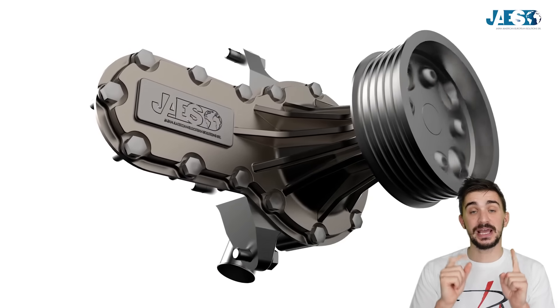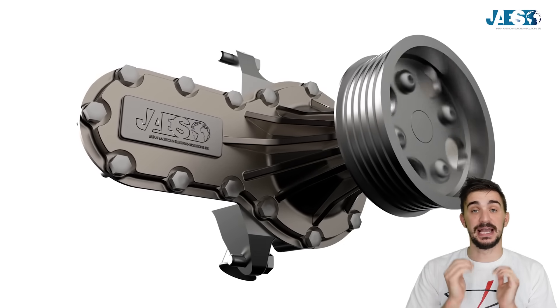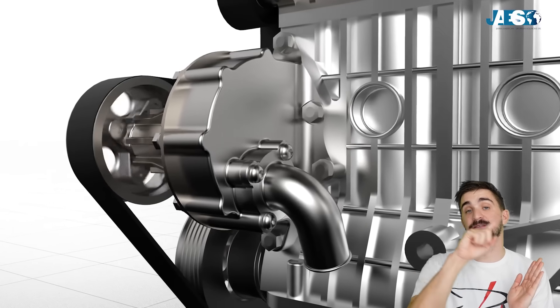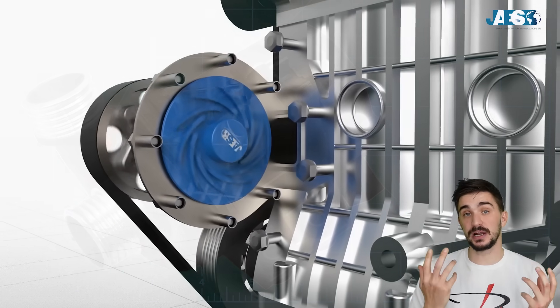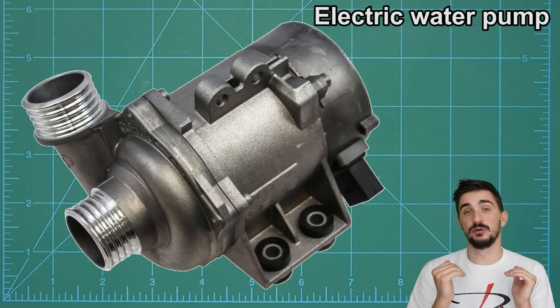To ensure proper circulation a water pump is also necessary and it's usually driven by the engine via a belt. Although in more recent vehicles the water pump can also be electronic which reduces the parasitic load on the engine.